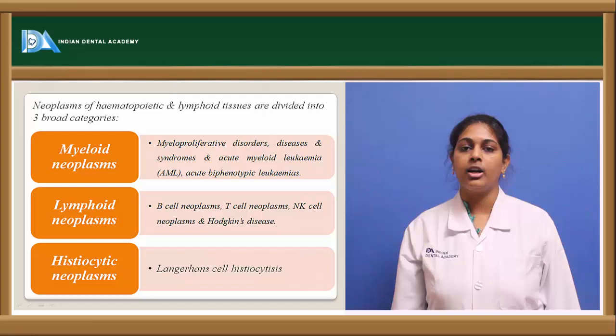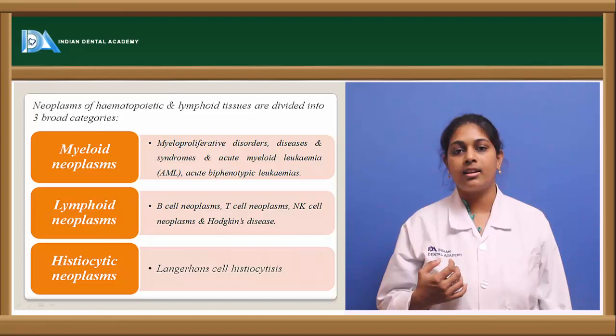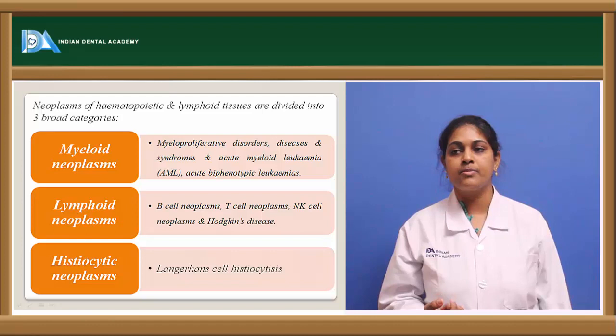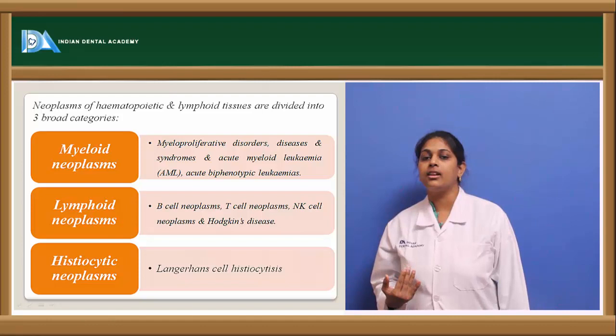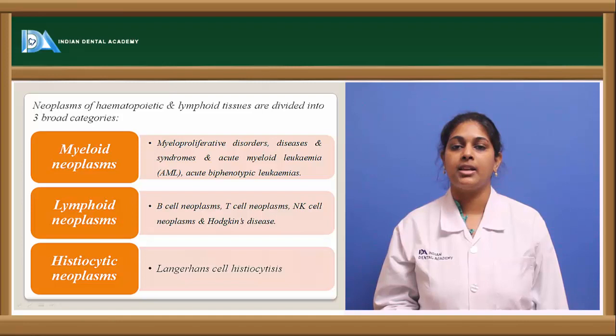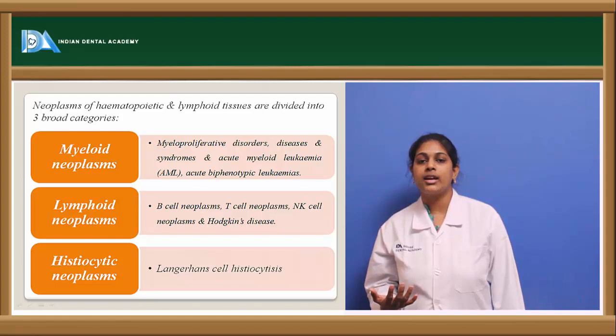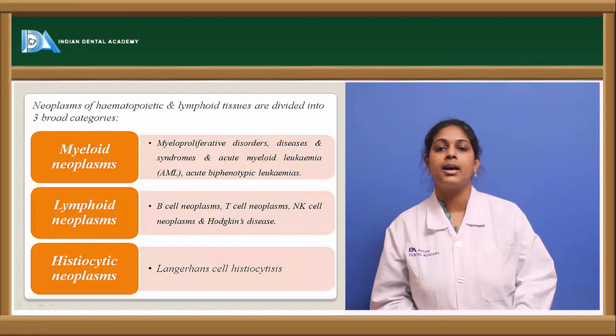Lymphoid neoplasms include B cell neoplasms — cells from the bursa — T cell neoplasms derived from the thymus, natural killer cell neoplasms, and Hodgkin's lymphoma. The third category is histiocytic neoplasms. Lymphocytes or macrophages that reach the tissues are known as histiocytes, and any mutations in these result in histiocytic neoplasms, the most notable being Langerhans cell histiocytosis.